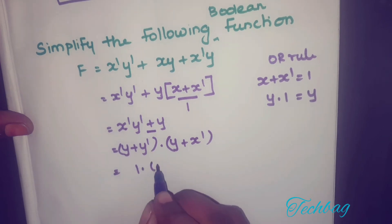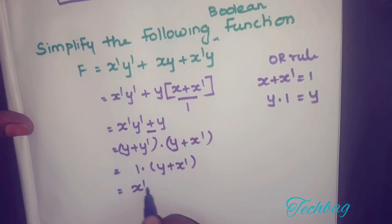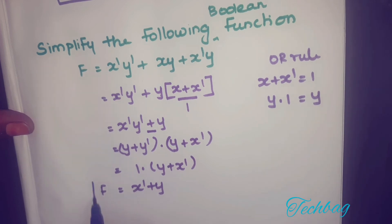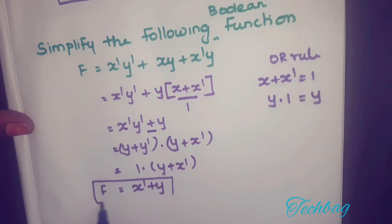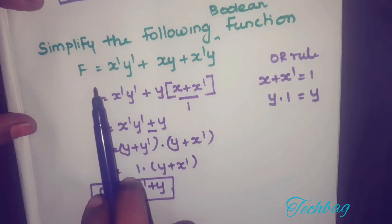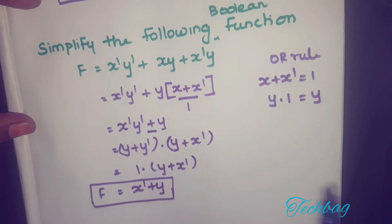1 times anything equals the same value, so you get x' + y. So the function F = x' + y. This is the simplified expression of the Boolean function F = x'y' + xy + x'y.